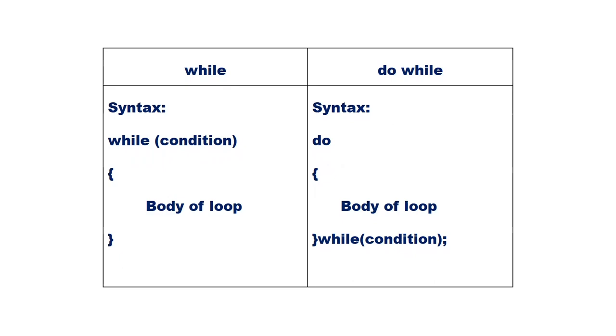On the other hand, the do-while loop executes the body of the loop at least once before checking the condition.